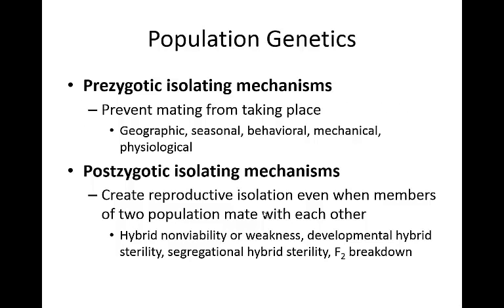Some of the barriers that may isolate different populations and prevent mating from taking place would be called prezygotic isolating mechanisms — this is before a zygote could potentially be produced. Examples of these would be geographic distances, seasonal differences, behavioral differences, mechanical, physiological, and so on.